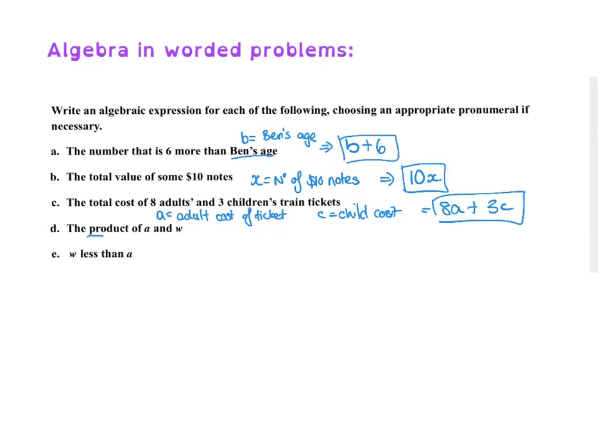Okay, now the product, that's another word for times. So the product of A and W, so we could say A times W, or with algebra, we don't often need the times symbol there. We understand that if we have A, W, that means we're times in between.